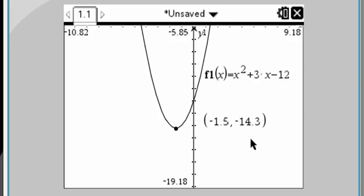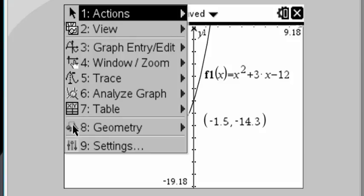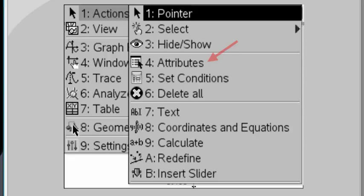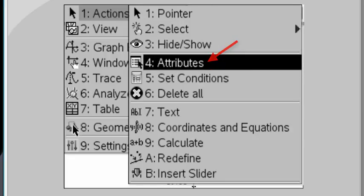And what we can do is we can increase the accuracy of what the y-coordinate is reading us. Right now it's only to the nearest tenth. Here's what you should do. Press menu. And then choose actions. And what we're going to do is we're going to change attributes. So choose number 4. And then press enter.